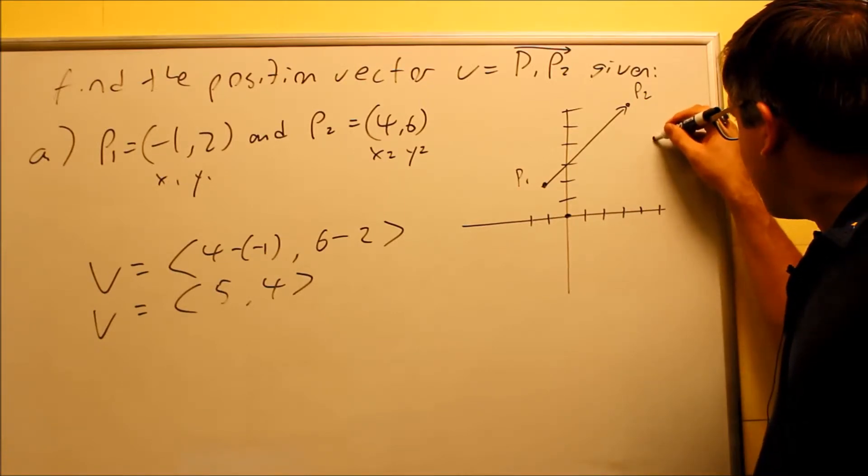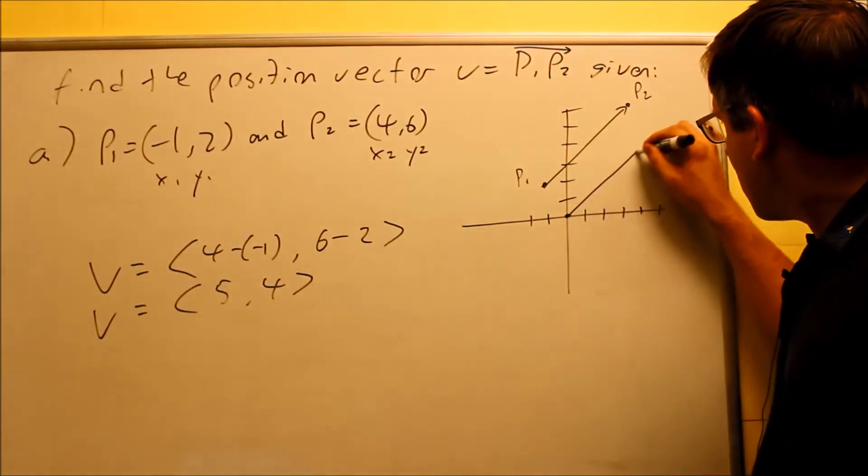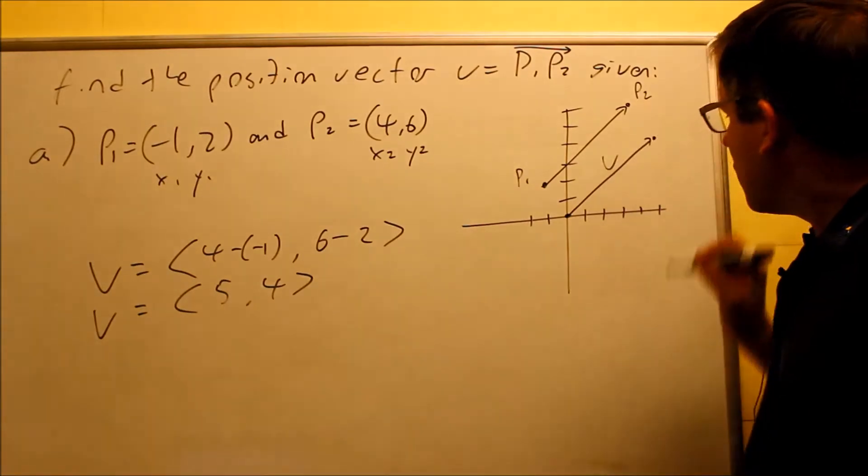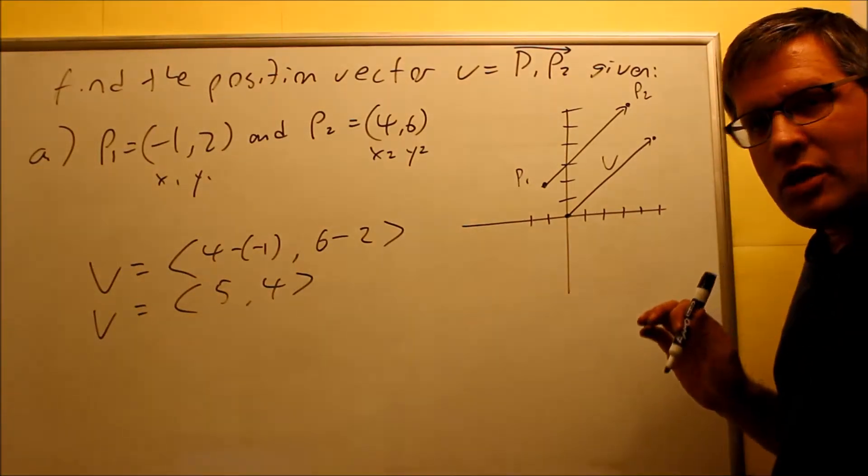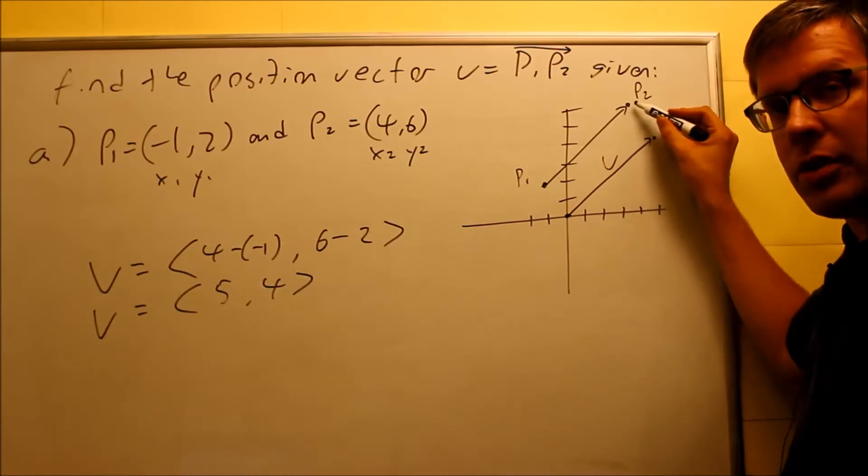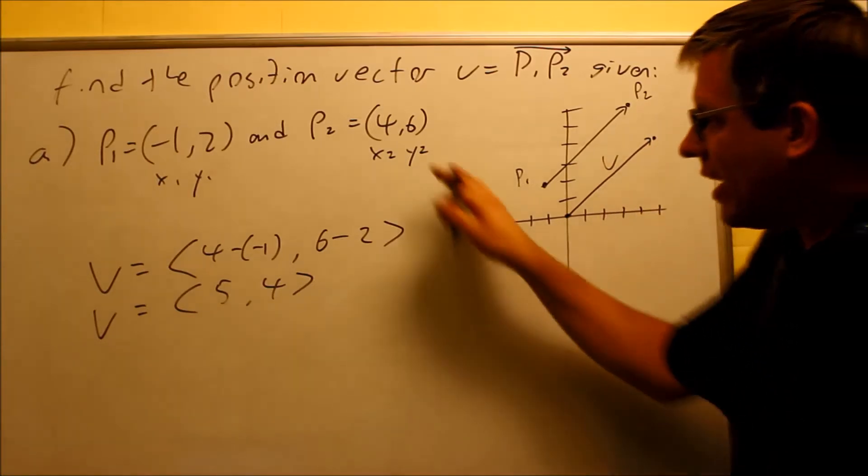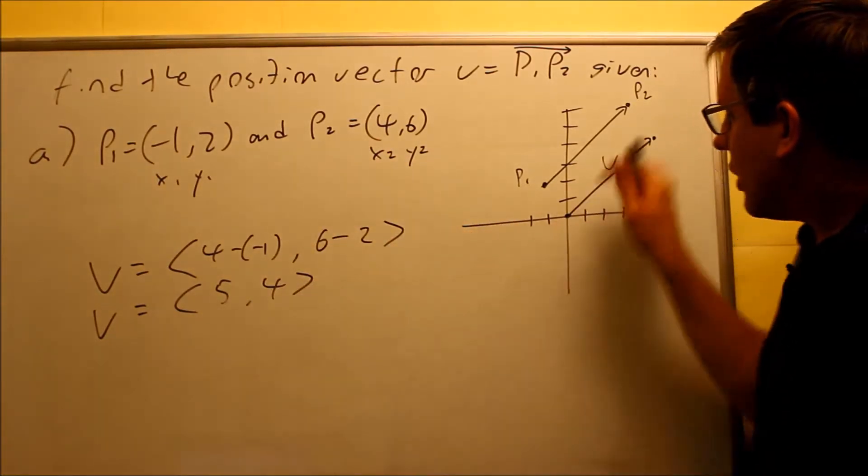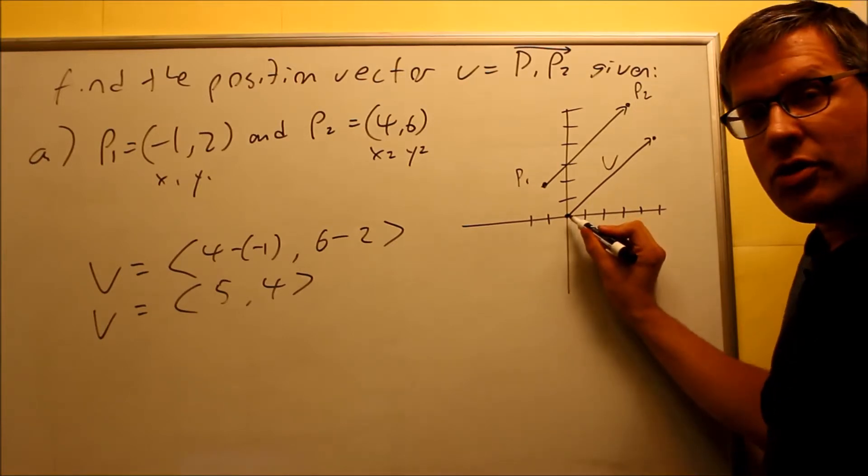So I do that. I get this point. And this right here is V. So notice what I just did. Originally I had it going through P1 and P2 up here. And all I did was I subtracted everything to get it down to a vector that starts at 0,0.